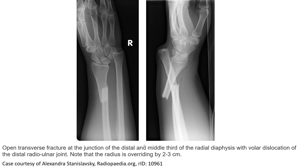This is an example of the first case of a Galeazzi fracture. It is Type 1. We see an open transverse fracture of the distal and mid-shaft of the radius with volar dislocation of the distal radio-ulnar joint. Note that the radius is overriding by 2 to 3 cm.